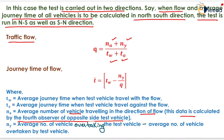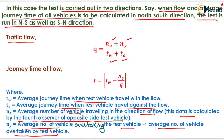Ny is the average number of vehicles overtaking the test vehicle minus the average number of vehicles overtaken by the test vehicle. Tw is the average journey time when the test vehicle travels with the flow, and Ta is the average journey time when the test vehicle travels against the flow. To determine the journey time of flow, it equals Tw minus Ny divided by Q.